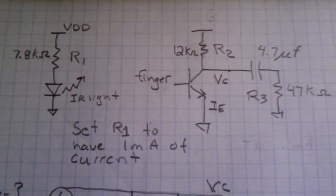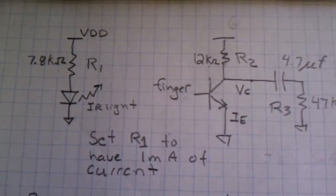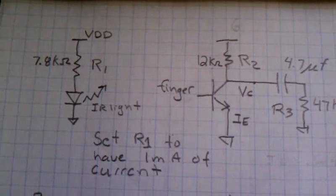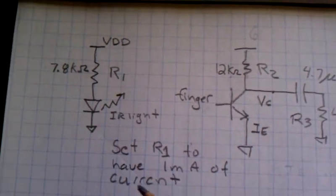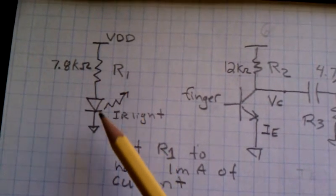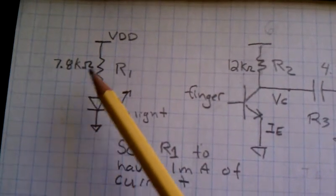Here's a brief overview of the sensor biasing that we used for the OPB607 photodarlington transistor. We biased the infrared LED with a 7.8K resistor.